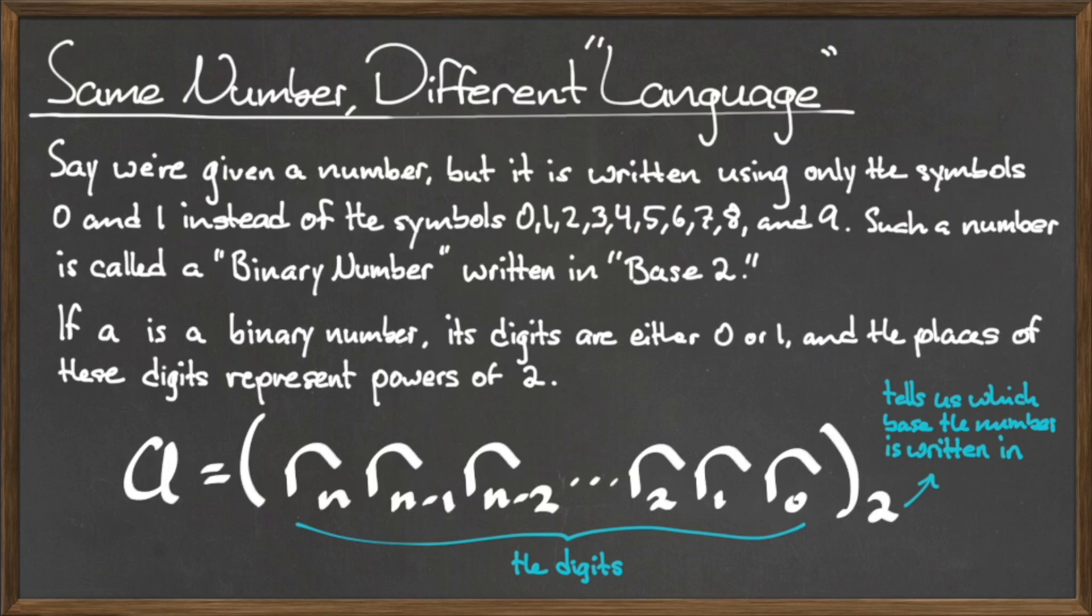In a binary system, the rightmost digit represents 2 to the 0th power, the digit to the left of that represents 2 to the first power, and so on.